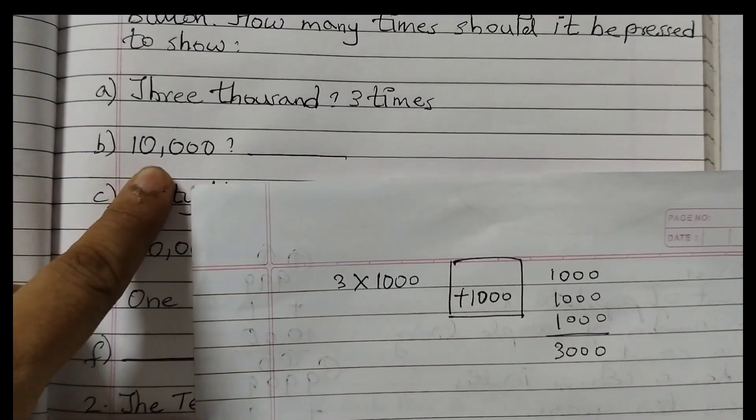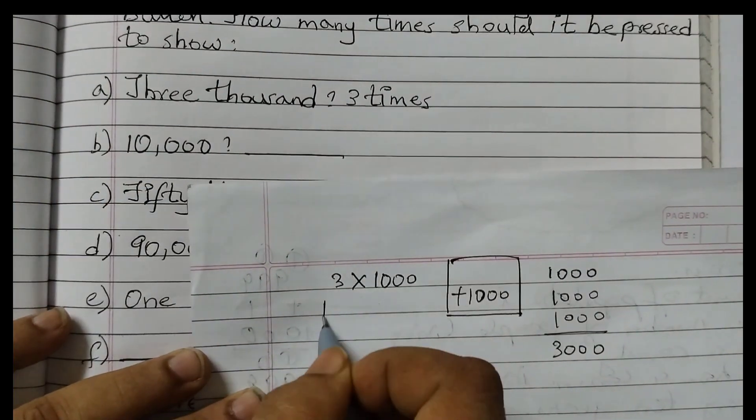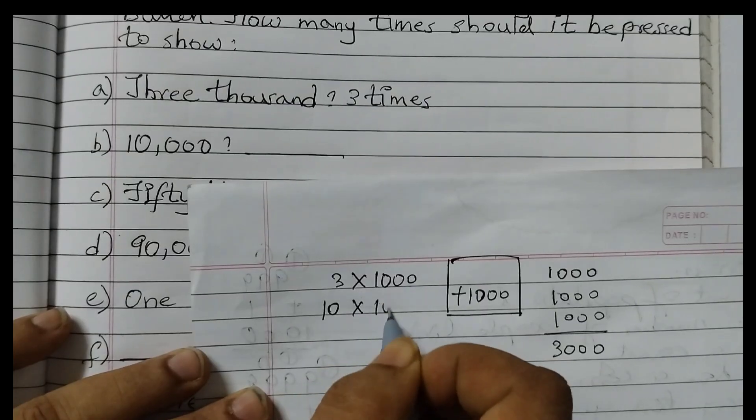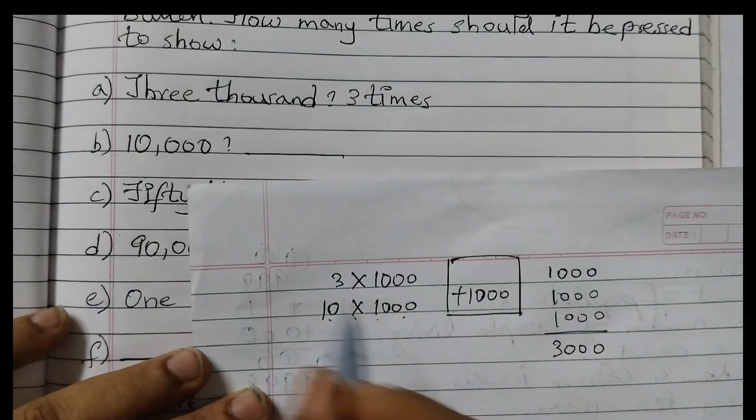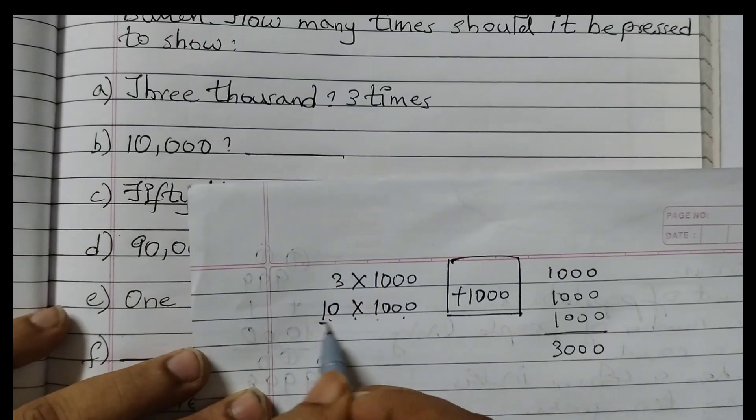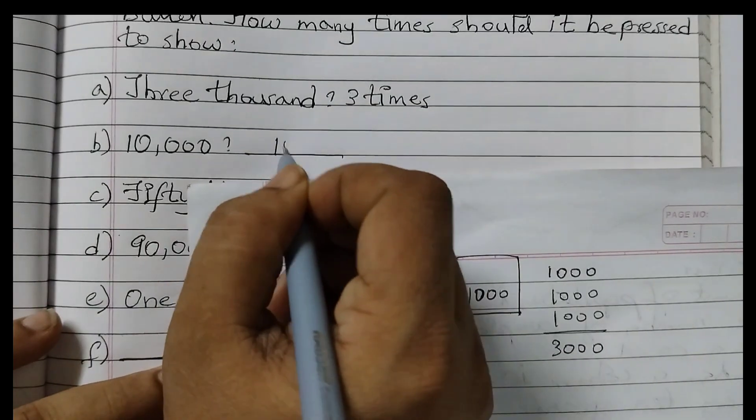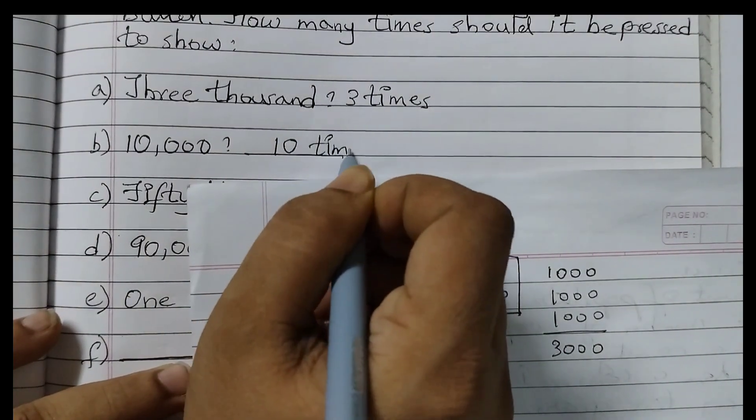The next one is 10,000. So 10 into 1000. 10 times 1000 will give you 10,000. So the answer is 10. 10 times.